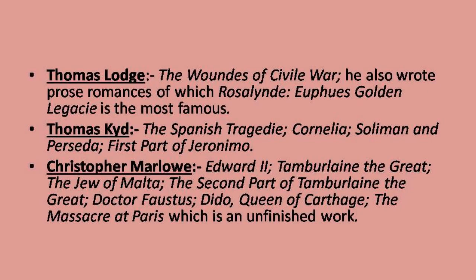Thomas Lodge wrote The Wounds of Civil War, a chronicle play, and also wrote prose romances of which Rosalynde: Euphues' Golden Legacy is the most famous. It is said that Shakespeare closely followed its plot for As You Like It. Thomas Kyd's most famous work is The Spanish Tragedy. He also wrote Cornelia, a translation from the French Senecan Garnier, Soliman and Perseda, and the first part of Jeronimo, an attempt to write an introductory play to The Spanish Tragedy.